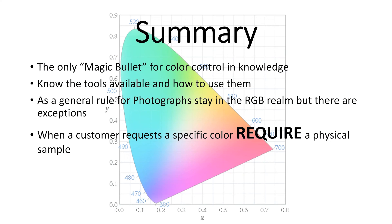Summary: the only magic bullet for color control is knowledge. If you know what tools you have available, you can get where you want to be. As a general rule, photographs stay in the RGB realm, but there are exceptions. Probably the best piece of advice I can give you is: when a customer requests a specific color, require a physical sample. Don't let them tell you it's Pantone 312, because there are several versions. Don't let them tell you it's an RGB or CMYK number. Require a physical sample if they want a color matched exactly — that's the only way to ensure you get it, because every screen looks different and swatch books vary. Always require a physical sample. I hope that helps — if you have any questions, let me know. Thanks.